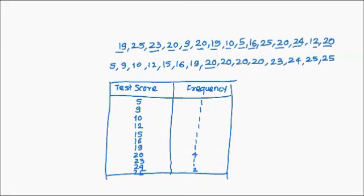So now it is very evident here that the highest frequency is 4 and that is for the test score of 20. And hence, in this case, the mode of our data is 20.